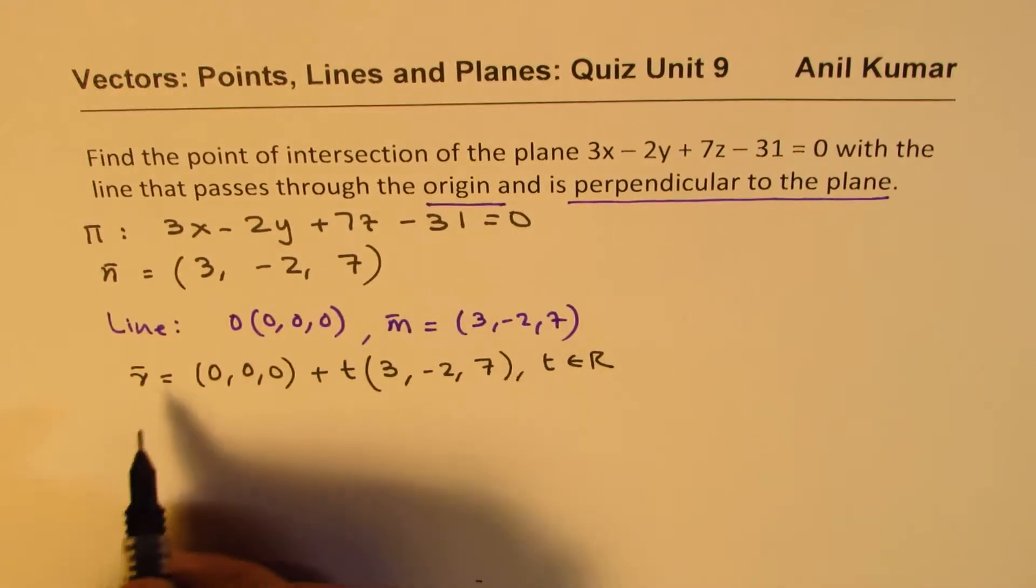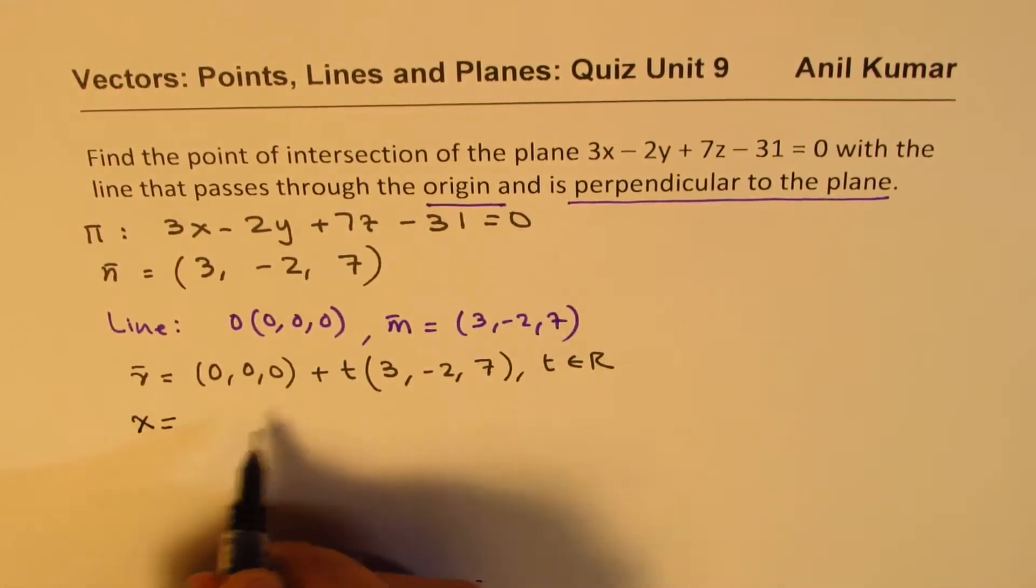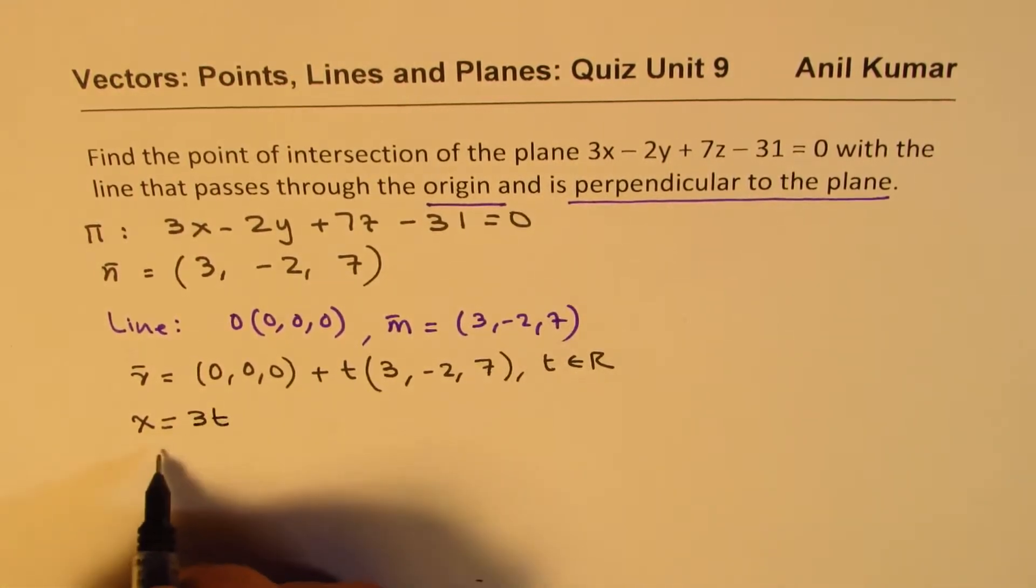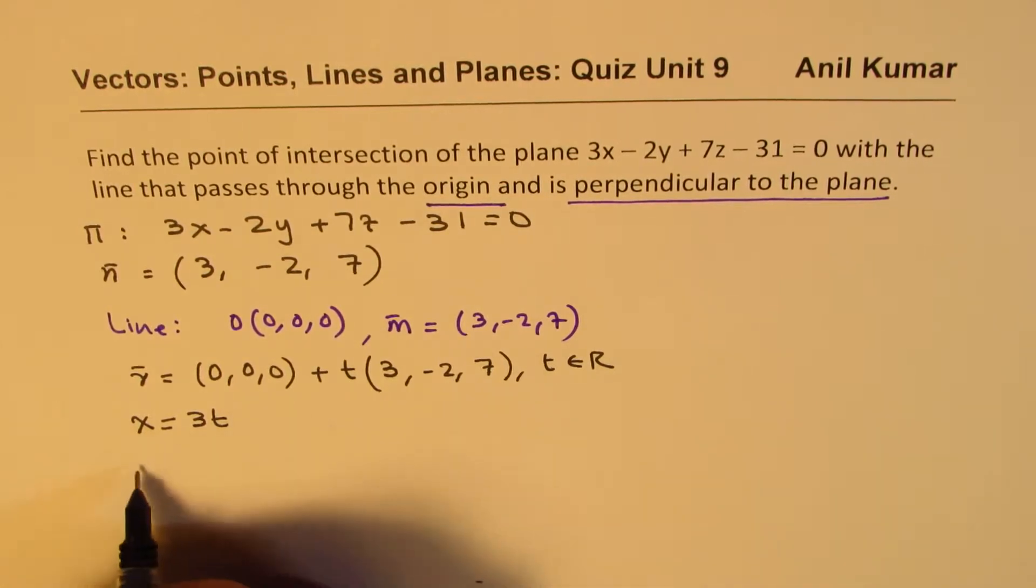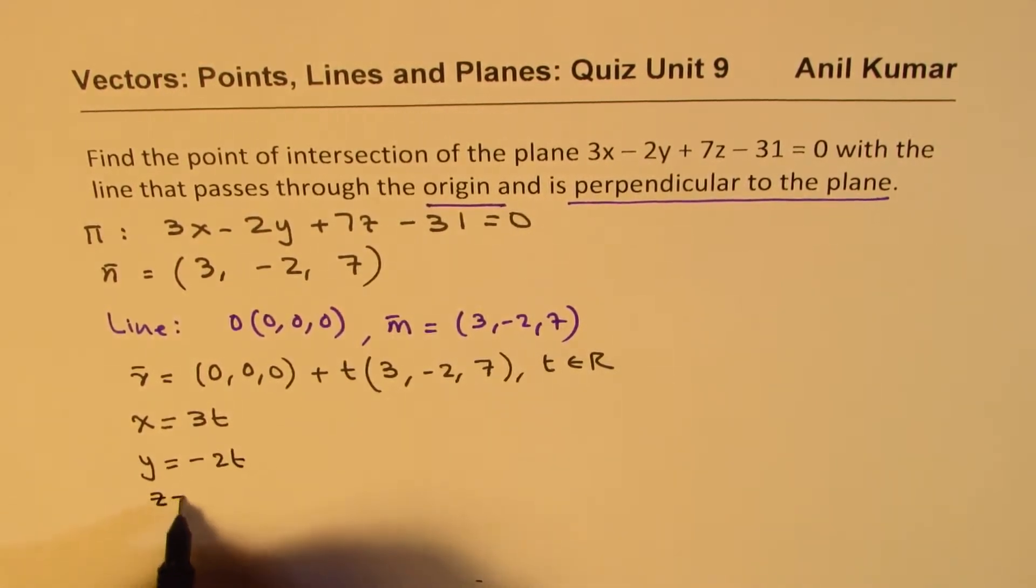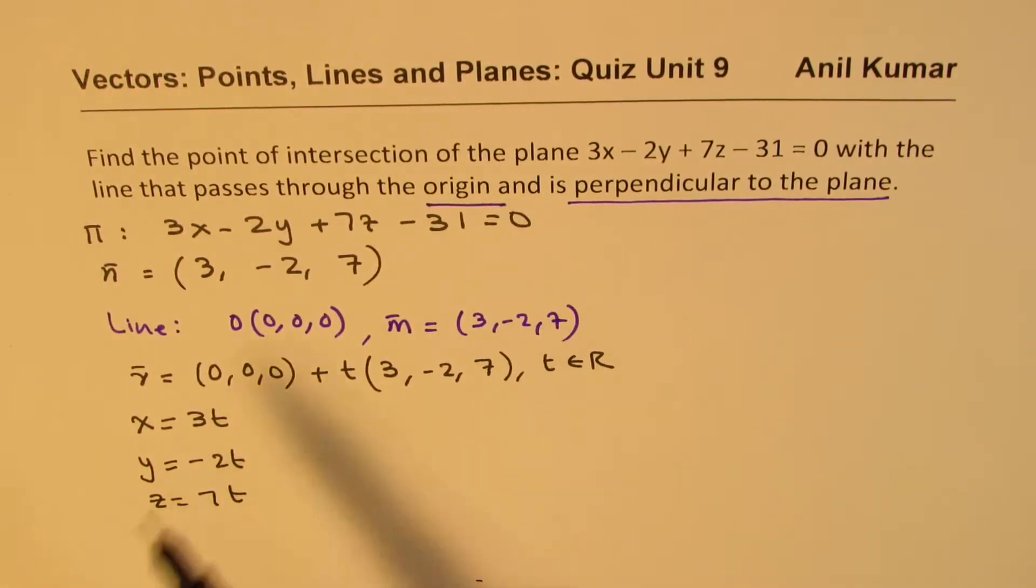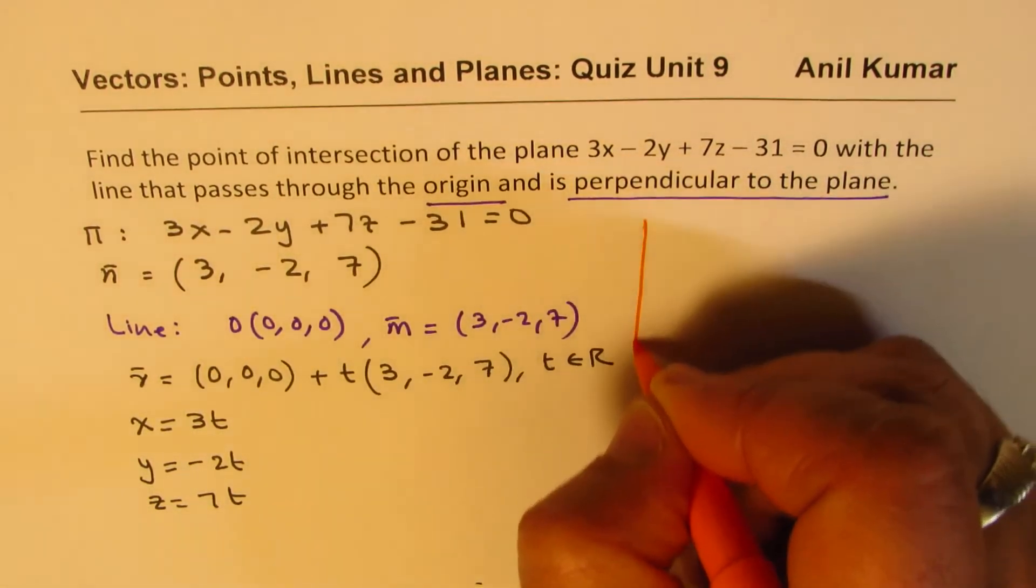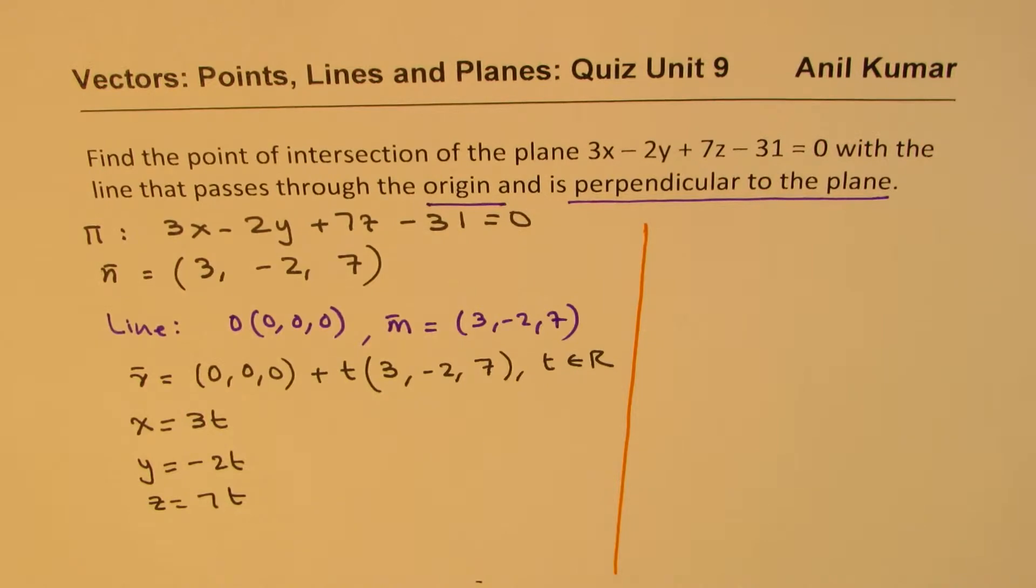Now we need to find point of intersection. So let me write this as x equals to 3t, y equals to minus 2t, and z equals to 7t. So if I substitute these values here in the plane and find the value of t, I know my point. So I hope you understand the strategy.